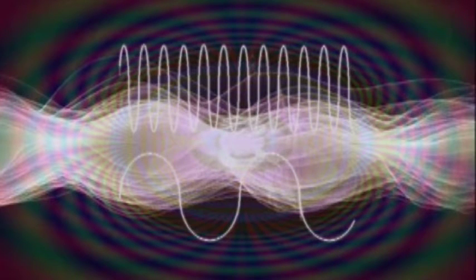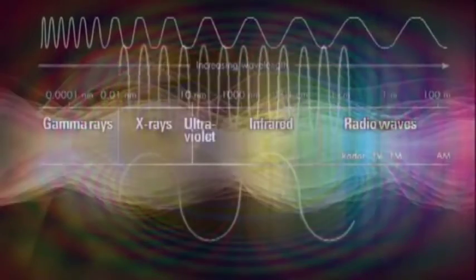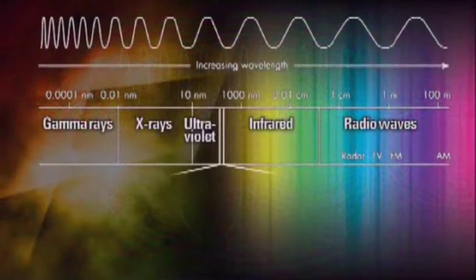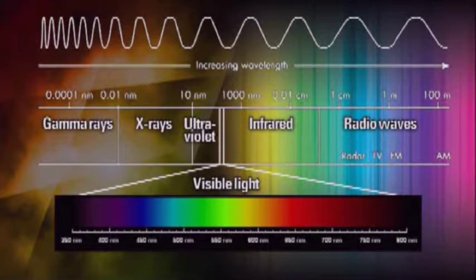So everything that we can experience is vibration. For example, with our eyes, we can only see a very small piece of the light spectrum. This is the light spectrum, and we can only see a tiny piece of it. You can see that piece is magnified at the bottom — that's what we can see.